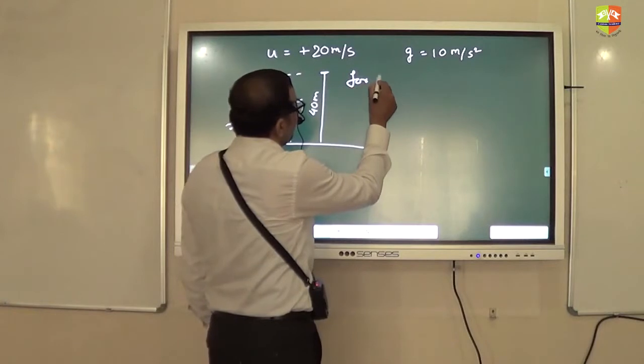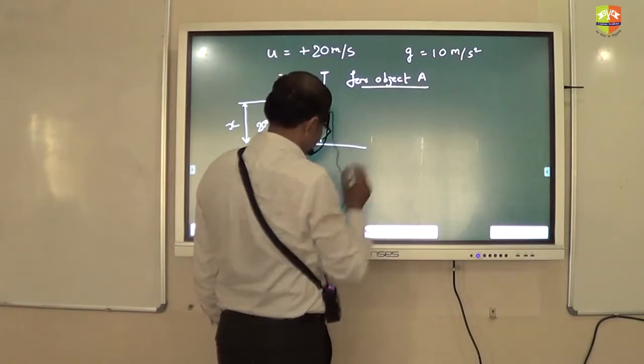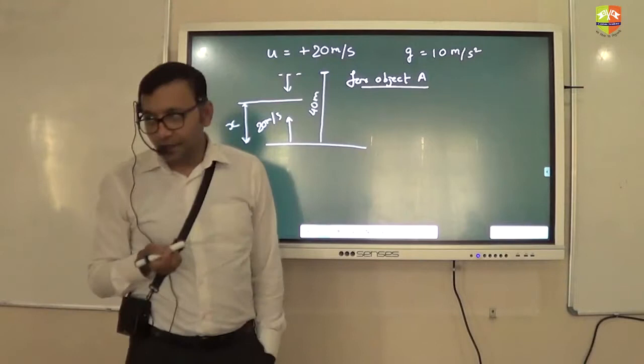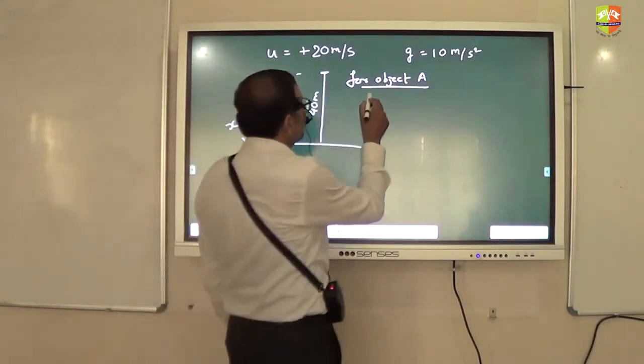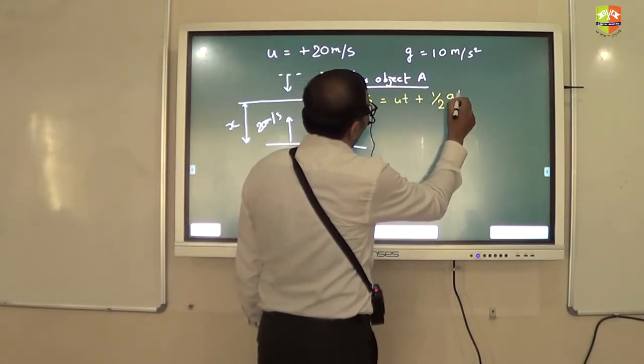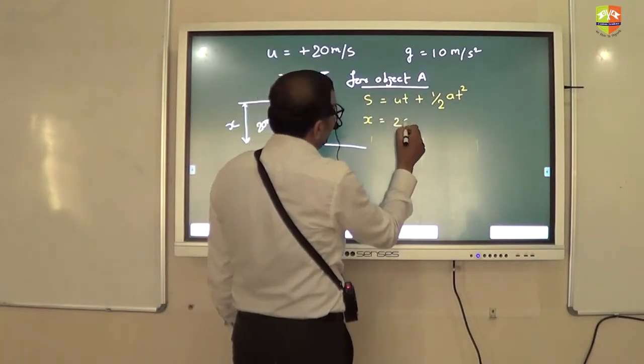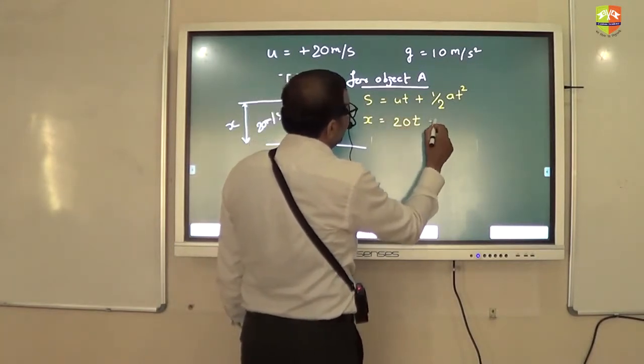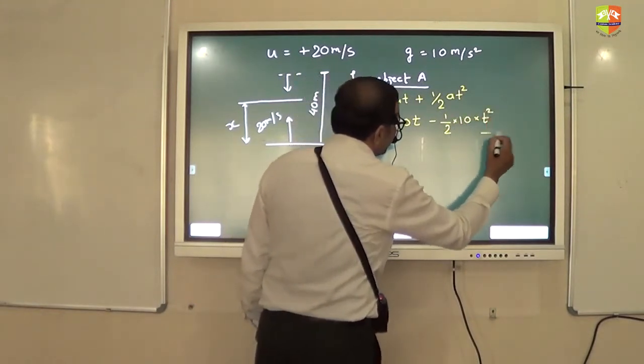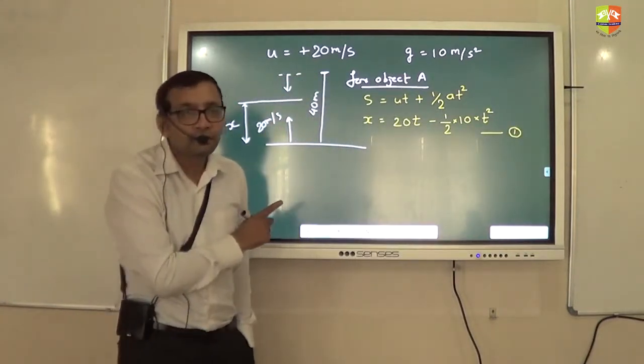For object A, if I write S = ut + ½at², how will I write? S is x, u is 20 into t, a is minus 10. This is my first equation, right? This is for object A, any doubt here?